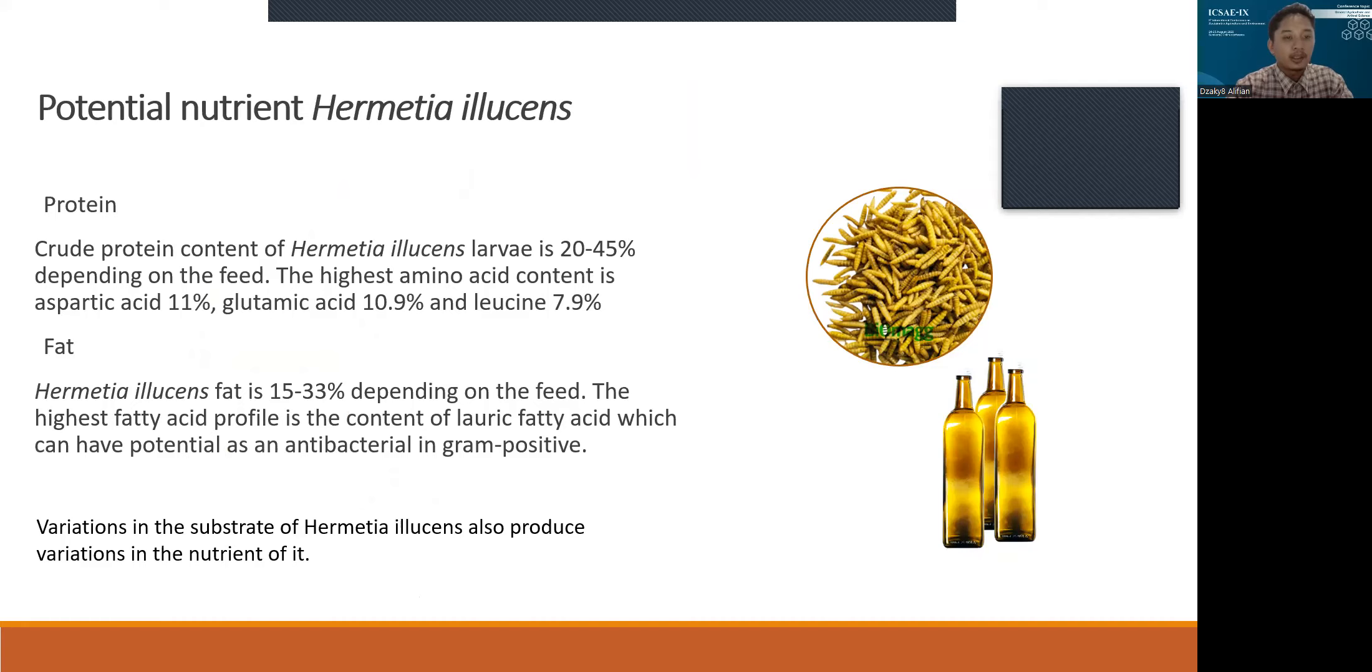Hermetia illucens fat is 15-30% depending on the feed. The highest fatty acid profile is the content of lauric fatty acid, which has potential as an antibacterial in gram positive. There are many potentials for Hermetia illucens to be developed, but not many nutritional standards have been studied.